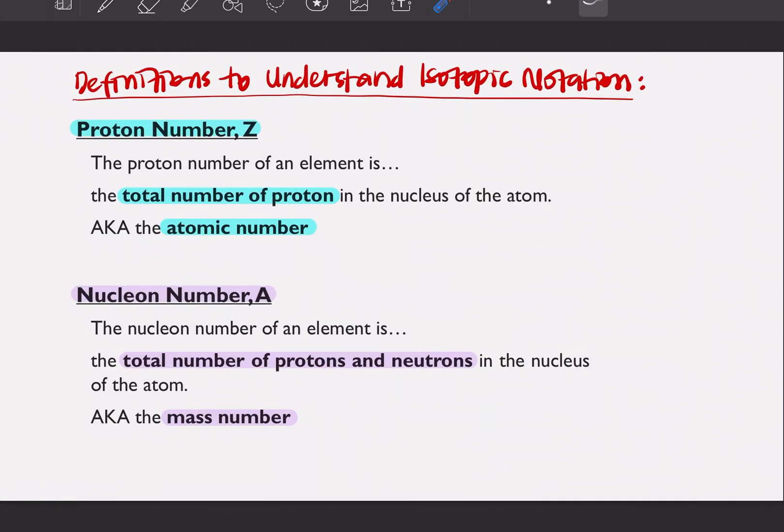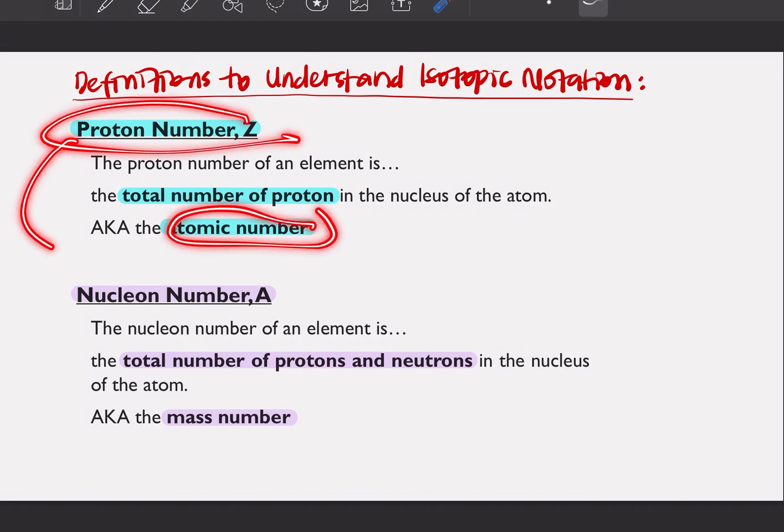Next, we are going to look at these definitions. We need to understand these definitions to understand isotopic notation. So first we have to know what is this term proton number with the symbol Z. So proton number is basically the total number of protons in the nucleus of the atom or also known as atomic number. So kalau soalan tu dia cakap atomic number, that means it's actually the number of protons. Ini dengan ini sama maksud.